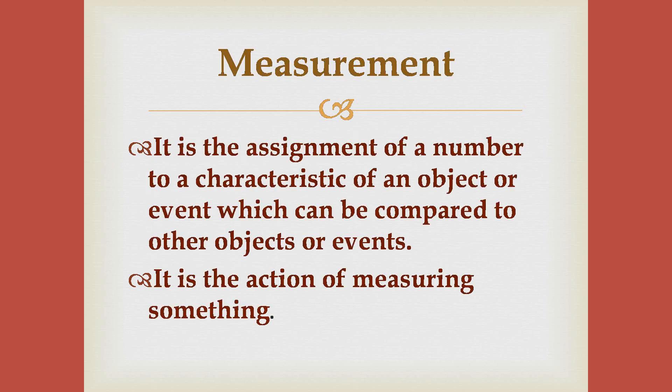In previous lessons we have already learnt about what measurement is. Like if I ask you how old are you, how much do you weigh, how tall are you — in order to answer all these questions you need to measure. To find how old you are you need to measure time, to know how much you weigh you must weigh yourself, and to know how tall you are you need to measure your height. So you can see that in these measurements we need two important attributes: the numeric value and the unit.